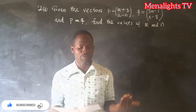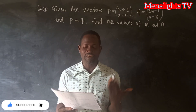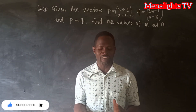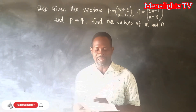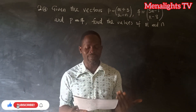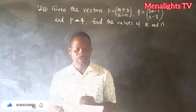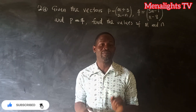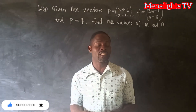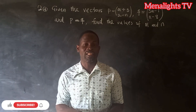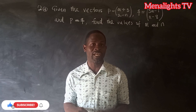Question number two (a): given that vector p = (m+3, 2−n) and vector q = (3m−1, n−8), and p is equal to q, find the values of m and n. Since p is equal to q, these two vectors are equal vectors.